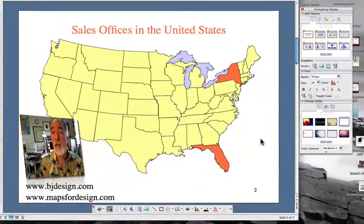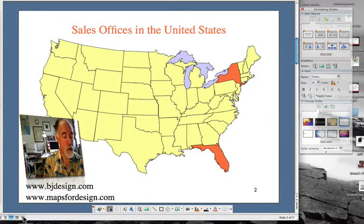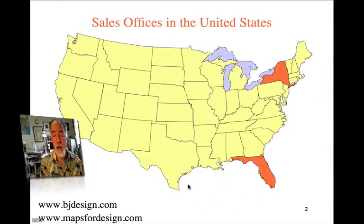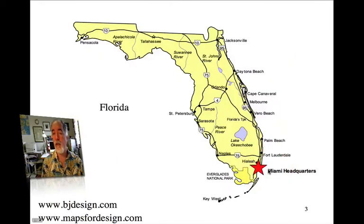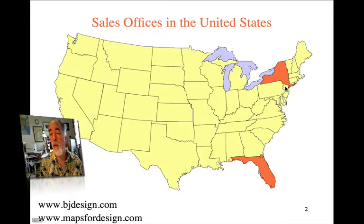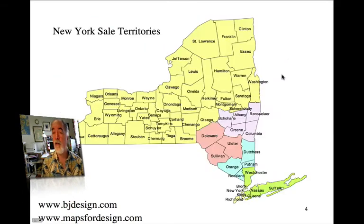That's all it takes — it's ready to go. I'm going to test it using the slideshow button in the corner. Now with the slideshow running, I click on Florida and it automatically jumps to the Florida slide. I go back to the United States map and click on New York, and it jumps to New York.